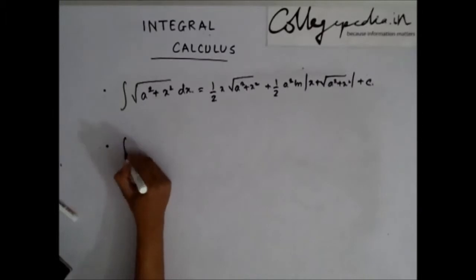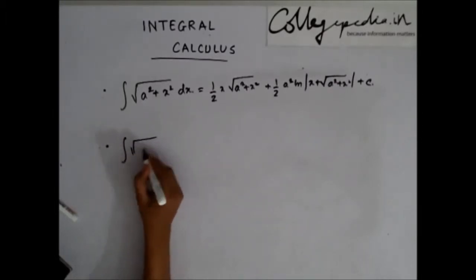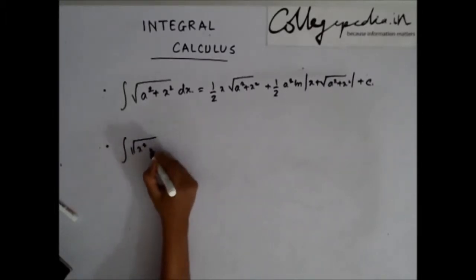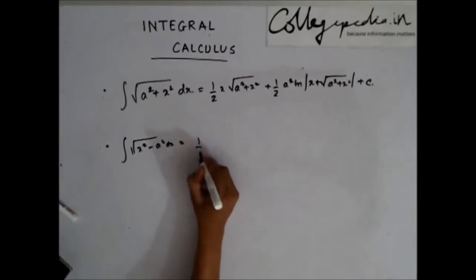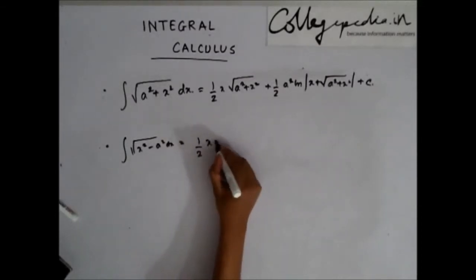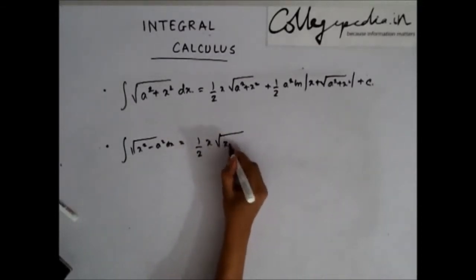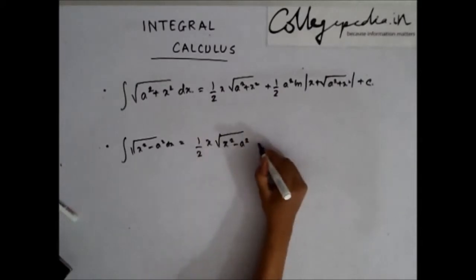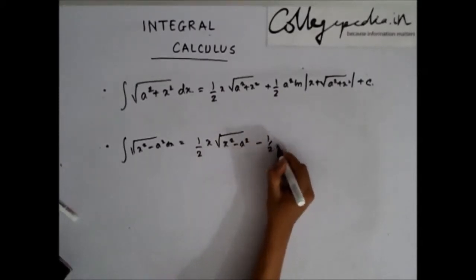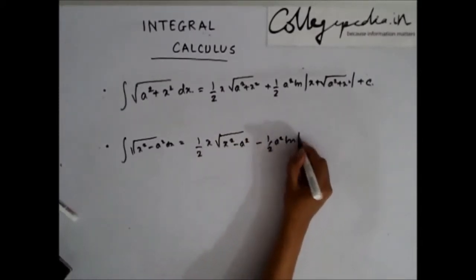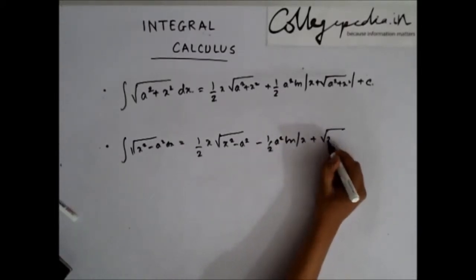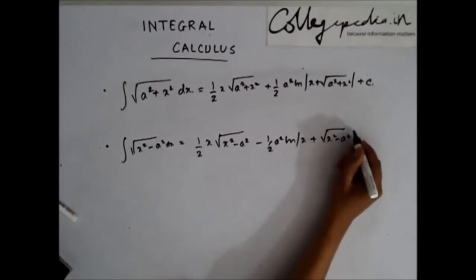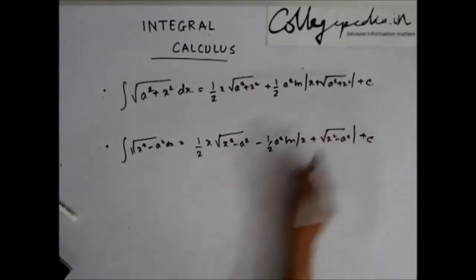The integration of √(x²-a²) dx is given by: half of x·√(x²-a²) minus half of a² times ln of (x + √(x²-a²)) plus a constant c.